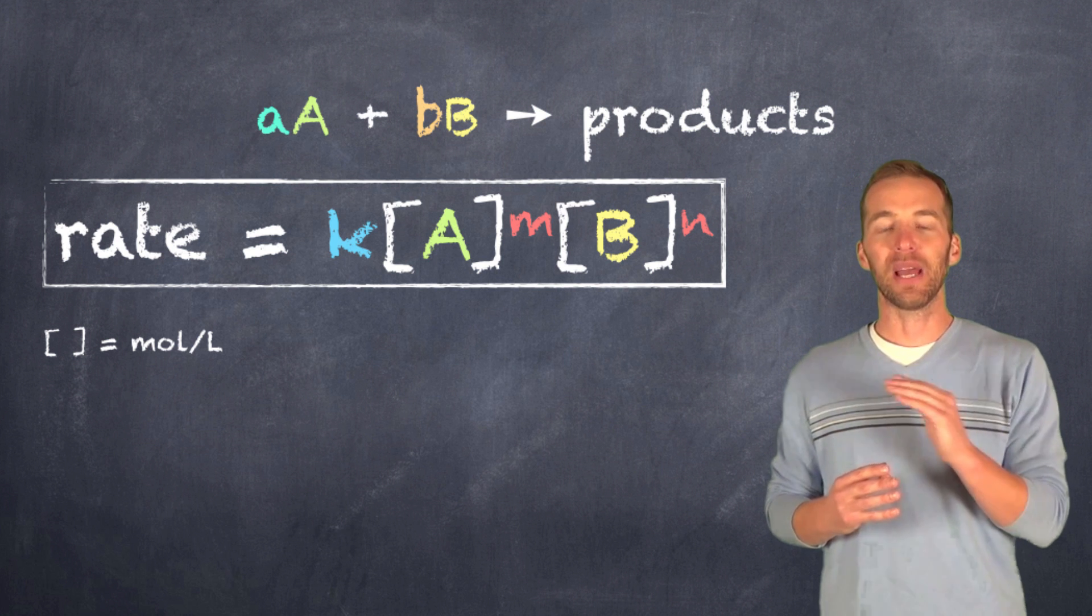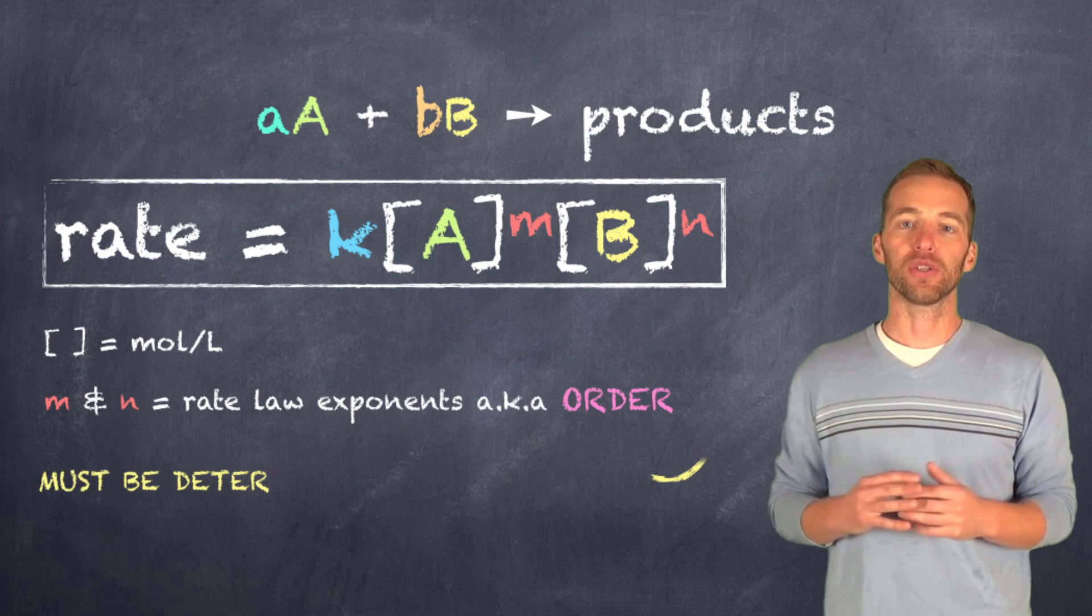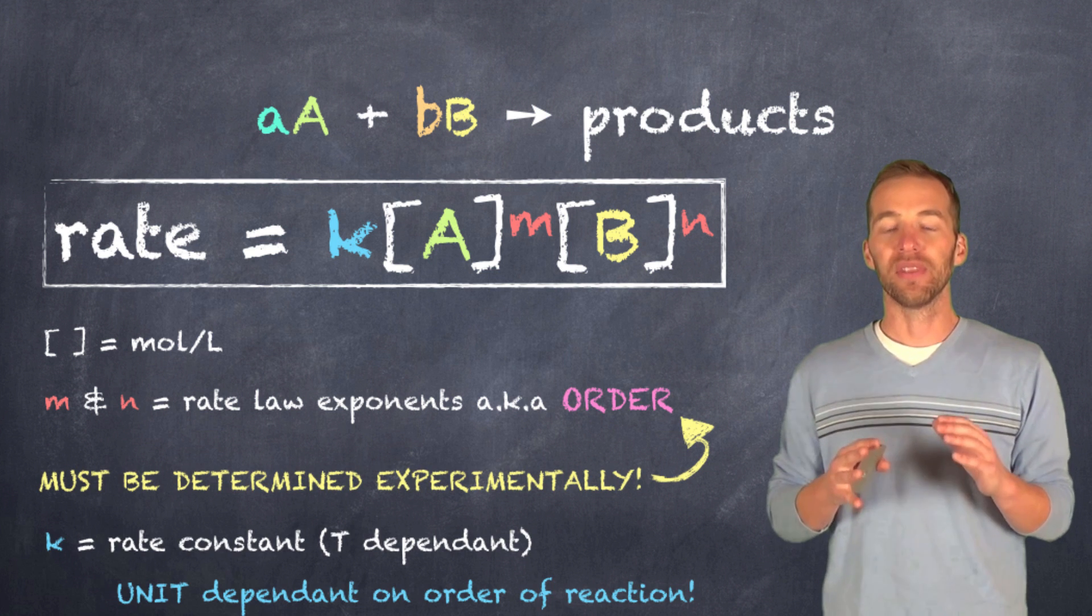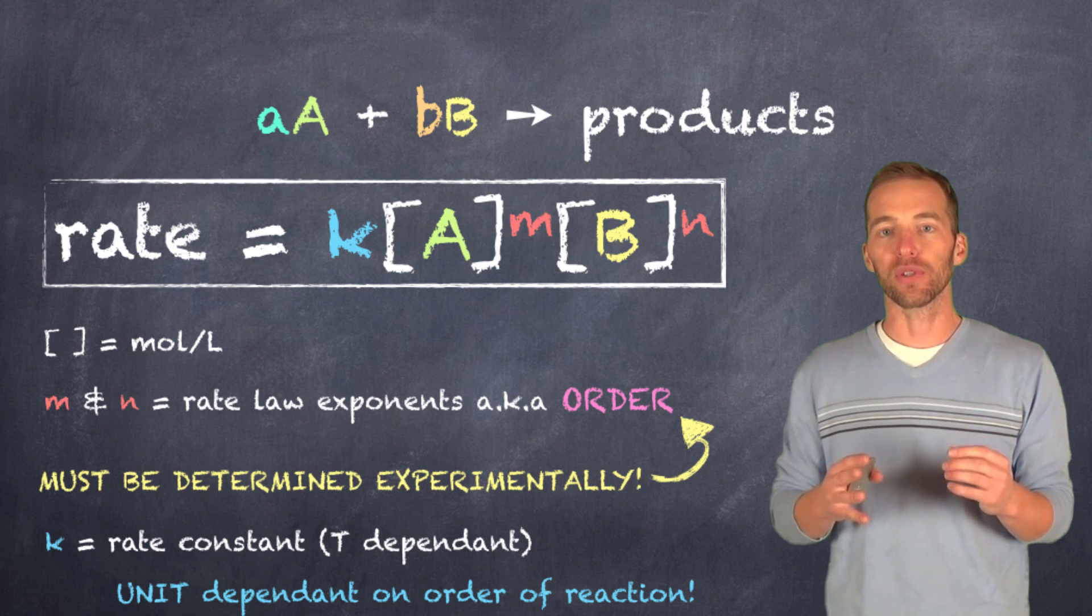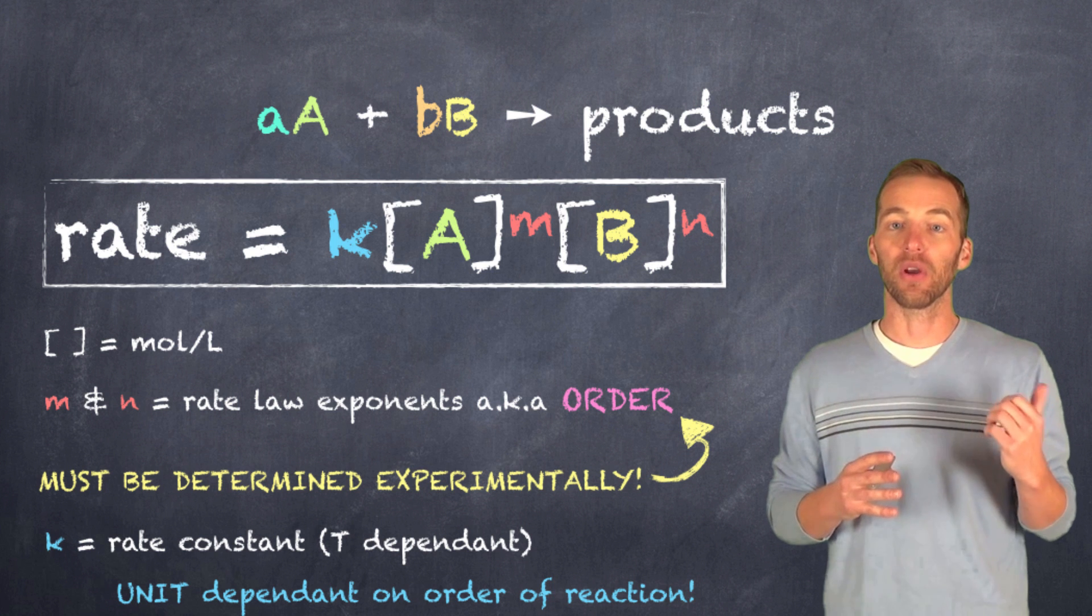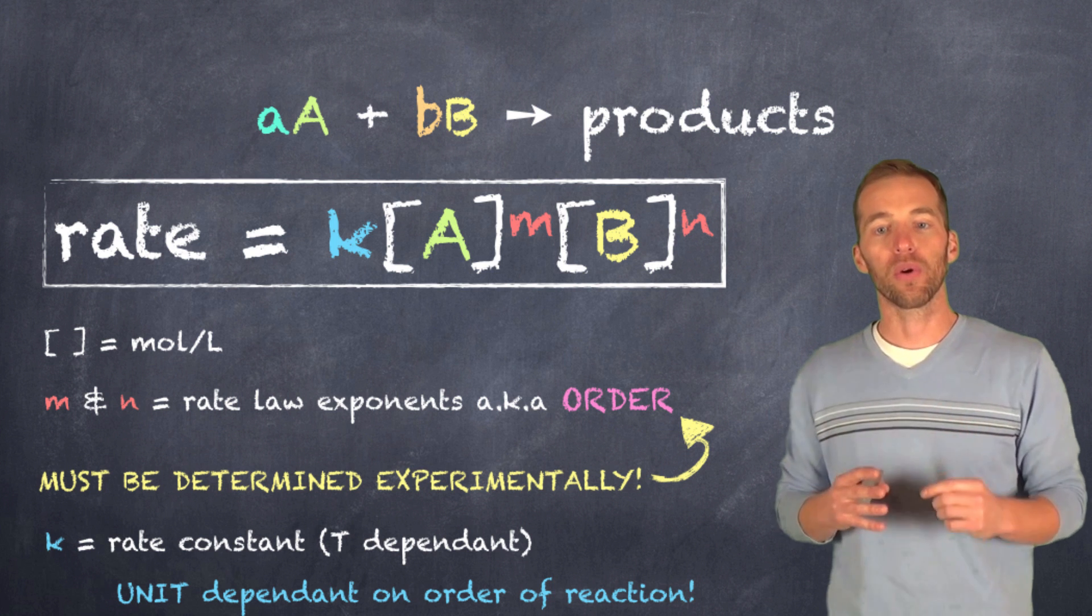The exponents that you see there, the m and the n in this case, are what we refer to as the rate law exponents, and they represent the order of these reactants. And the order just refers to the effect that a change in concentration is going to have on the overall rate. And we'll get to order in just a second.